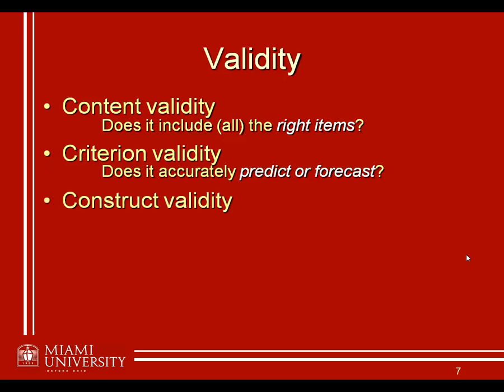Third is what we call construct validity. Construct validity is sort of a global or catch-all type of validity, and it simply asks: is it measuring the correct construct? That is, if we're trying to measure something like intelligence, are we indeed measuring intelligence and not something else? For that reason, construct validity is often broken down into two different types of validity. Pay attention here because this is not covered in Jackson's Chapter 3. To establish the broader notion of construct validity, does my test or scale or operational definition of this variable indeed measure the construct that I think it measures, or is it in fact measuring something else?